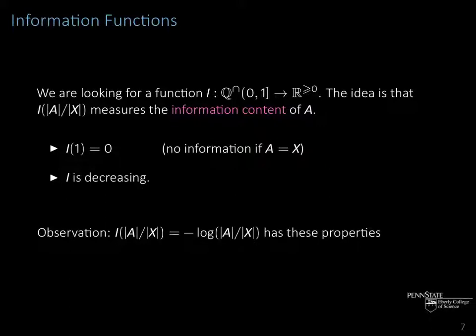We do everything as a function that depends only on the cardinality of A, not on A itself. This is justified because we assumed we know nothing about X but its cardinality in the combinatorial setting. Now observe that the function I(|A|/|X|) = -log(|A|/|X|) has exactly these properties. That's a possible candidate for such an information content function, and we'll see in a moment that it's in a certain sense the only possible function.